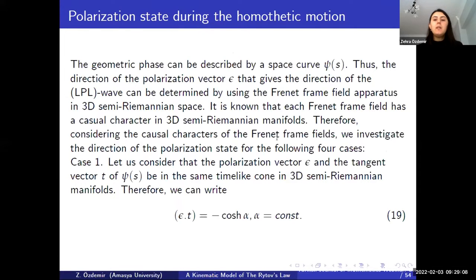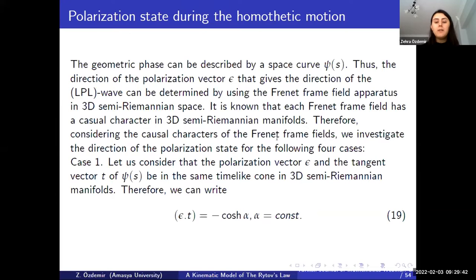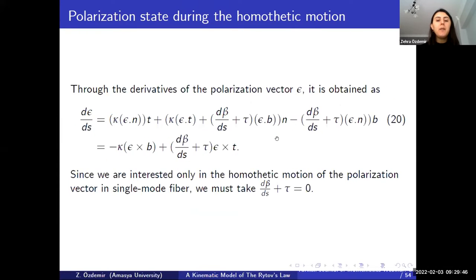Now we investigate the polarization states during the homothetic motion. The geometric phase can be described by a curve PC. We assume that the polarization plane makes a constant angle with the tangent vector of the optical fiber. We assume that E and the tangent vector T are time-like vectors in the same time-like cone. The angle between these vectors is defined by equation 19, and using some operations with the spherical coordinates of the electric field, we obtain the geometric phase model of the electric field in equation 20.